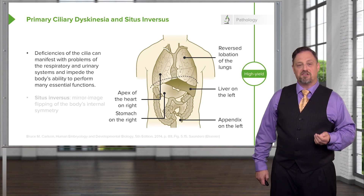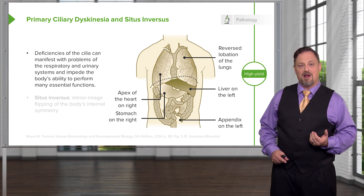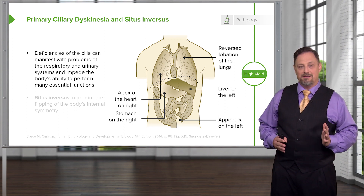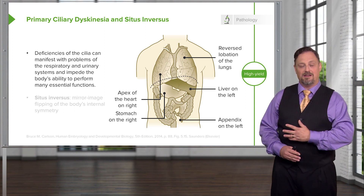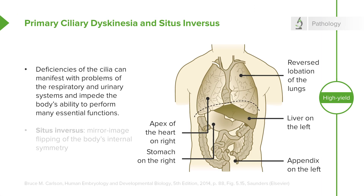Another very strange problem that can affect the body at this early stage of gastrulation is called primary ciliary dyskinesia, and it can result in the organs of the body being completely flipped into a mirror image of their normal position. So instead of having the liver on the right side of the abdomen, it could be on the left, with the appendix on the left side and the heart directed to the right side of the body. This happens because as gastrulation occurs, the body is deciding which side is left and which side is right.